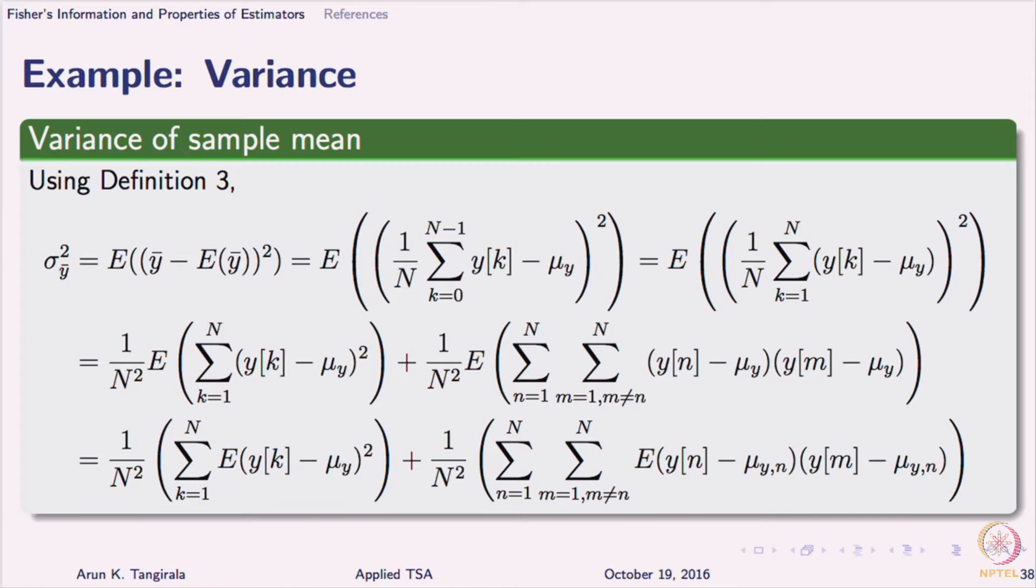Now, come to the second term. The second term, you recognize the innermost term to be auto covariance, right? Here we are not assuming yk to be white noise yet. If yk is white noise, the second term vanishes.